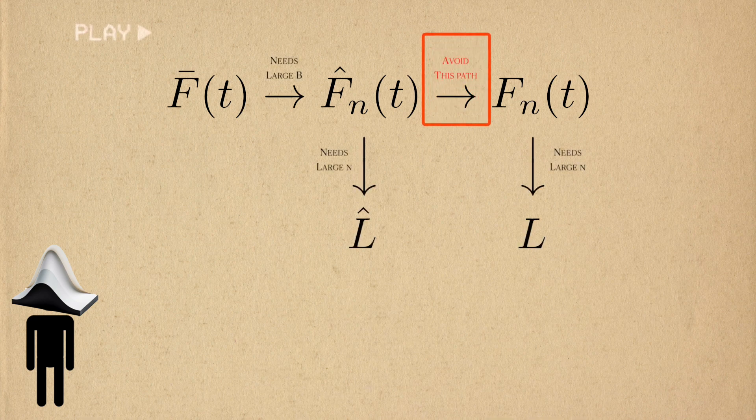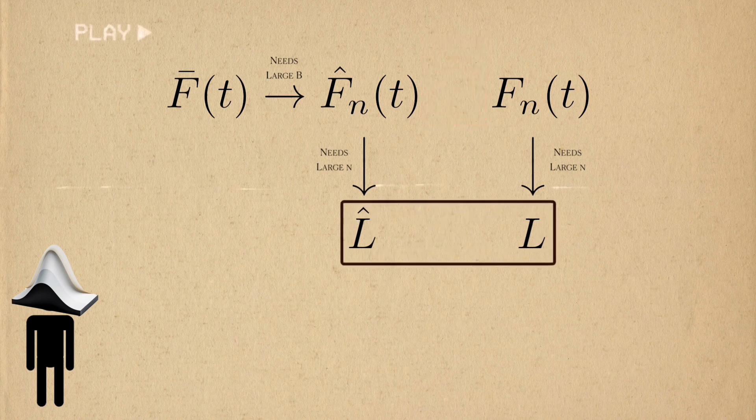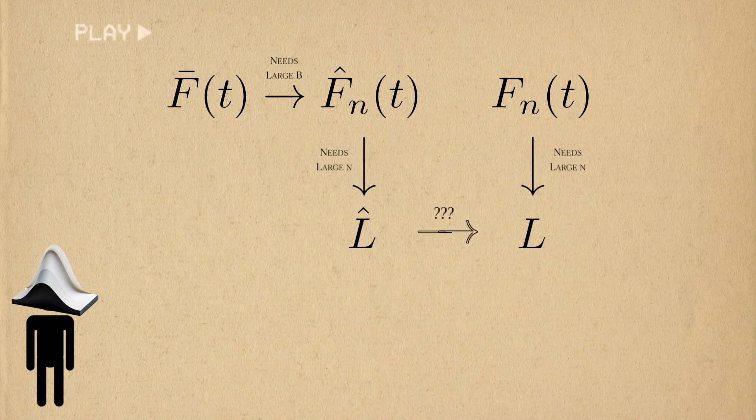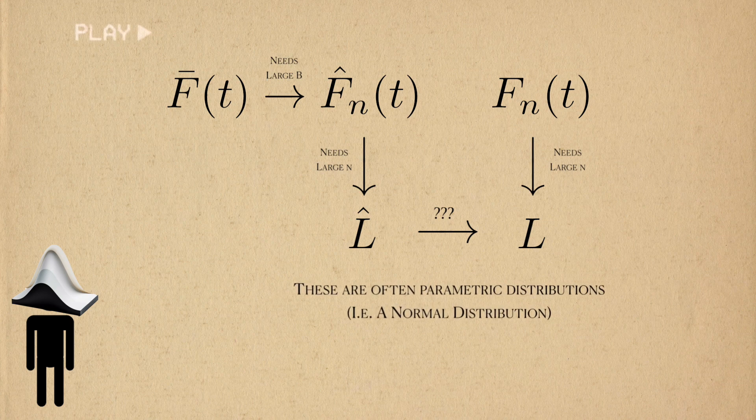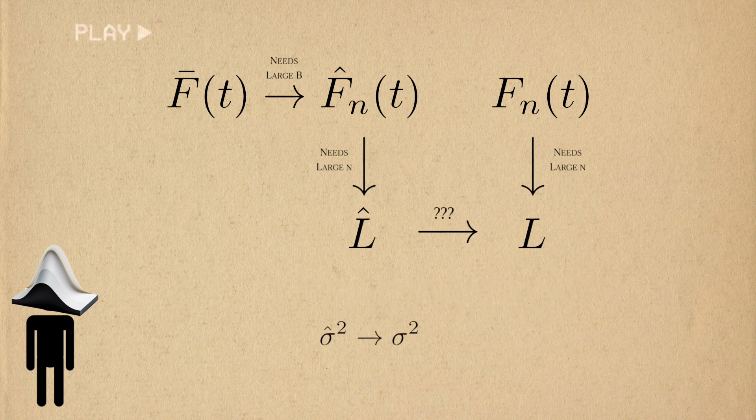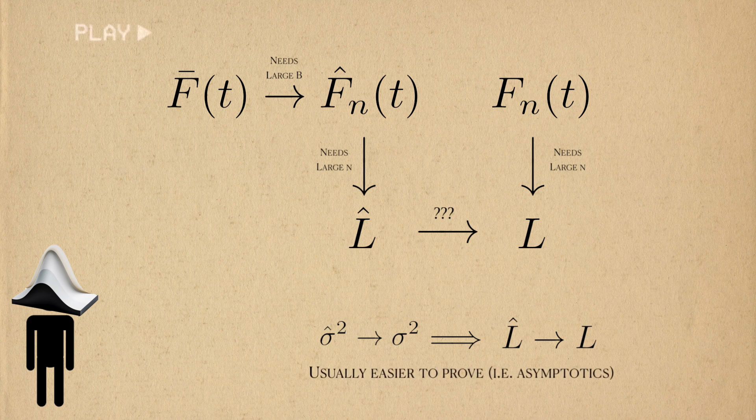Instead of linking the sampling distribution directly to the bootstrap distribution, we'll go through their limiting distributions. The final link we need is to demonstrate that the limiting distributions will uniformly converge. These limiting distributions often come from parametric families. That is, if the parameters of these two distributions converge, then the PDFs will also uniformly converge. This is usually much easier to show, and can also be done through asymptotics.